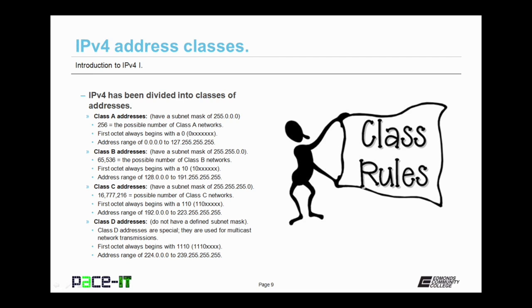Then there are class B addresses. These always have a subnet mask of 255.255.0.0. This gives us 65,536 possible class B networks. The first octet on the left of a class B address always begins with a one zero. So the first two bits are always one zero.